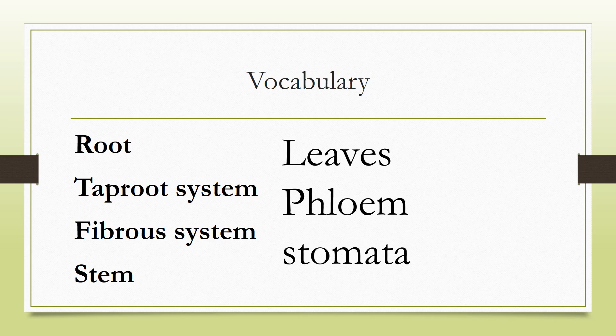Number three: fibrous root system. Number four: stem. Number four: stem. Number five: leaves. Number five: leaves.